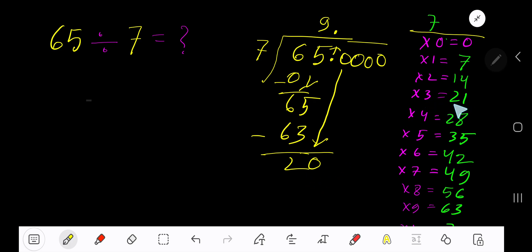3 times 21, which is greater, so 2 times. 2 times 7 is 14. Subtract, you are getting 6. Bring down another 0. 7 goes into 60 how many times? 9 times 63, which is greater, so 8 times.